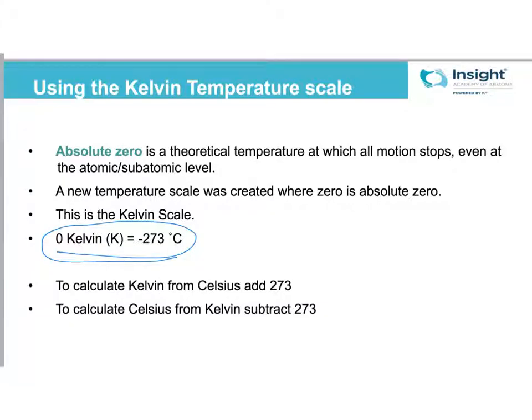Now this down here is very handy. This is how you convert. If you have a Celsius temperature and you need to calculate what it is in Kelvin, you're going to add 273 to it. If you have a Kelvin temperature and you want to figure out Celsius from it, then you subtract 273. So definitely write this down. Remember to use this, because again, some more math.